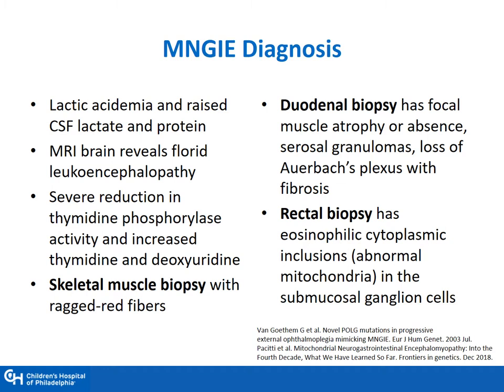When we think about how to diagnose MNGIE, we see lactic acidemia and raised CSF lactate and protein, as well as brain MRI with leukoencephalopathy. Skeletal muscle biopsies have ragged red fibers. Duodenal biopsies show focal muscle atrophy, serosal granulomas, and loss of Auerbach's plexus. Rectal biopsy has been shown to have eosinophilic cytoplasmic inclusions, which are abnormal mitochondria in the submucosal ganglion cells.